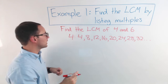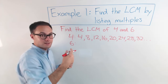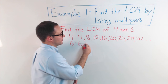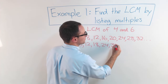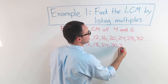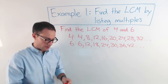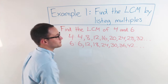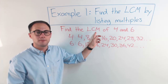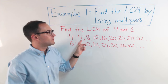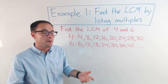We could keep going on forever. Next, for six: six times one is six, and then twelve, eighteen, twenty-four, thirty, thirty-six, forty-two — and that's going to keep going on forever. Now we want the least common multiple. We've listed the multiples — that's the first step. The second step is to find the ones that are in common.